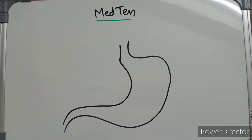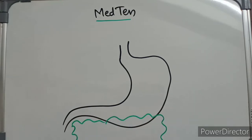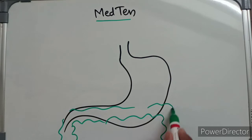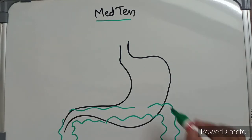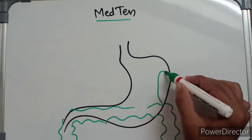Now we'll draw every organ that forms the stomach bed. I'll begin with the transverse mesocolon - somewhere here will lie the transverse mesocolon. And spleen will also form the stomach bed; spleen will lie somewhere over here.